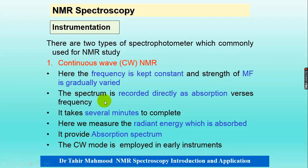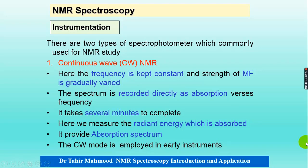In continuous wave, the spectrum is recorded directly as absorption versus frequency, so it provides us absorption spectra. It requires several minutes to complete and give us a spectrum. Here, we measure the radiant energy which is absorbed by the proton or the sample. The continuous wave mode was used in early instruments.